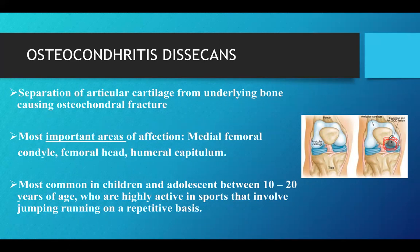The most important areas of affection for osteochondritis dissecans are the medial femoral condyle, the femoral head, and the humeral capitellum in the elbow joint. This condition most commonly occurs in children and adolescents between the ages of 10 and 20 who are involved in high-level jumping, running, and agility drills on a repetitive basis, because their bones are still growing and lack the strength to handle such forces, sometimes leading to loss of blood supply and osteochondritis dissecans.